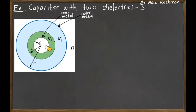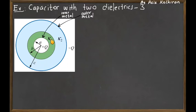In this example we have two different dielectric shells in a spherical distribution. We have a charged metal with plus q which has radius a. Around this metal we have a shell of dielectric material with dielectric constant k1 which has radius b. Around this we have another dielectric material with dielectric constant k2 with radius c, and on the outer shell we have the second metal with charge minus q.